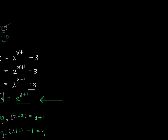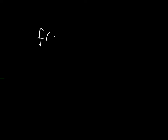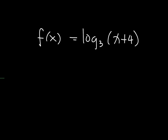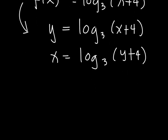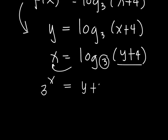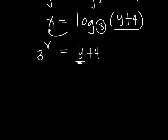Now let's take one example starting with a logarithm. Suppose f(x) = log base 3 of (x + 4). Using the same steps: rename f(x) as y to get log base 3 of (x + 4) = y, then interchange x and y so x becomes y and y becomes x. This time we convert from logarithmic to exponential form, giving 3 raised to x equals y plus 4.